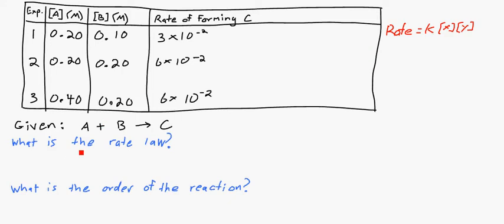Well you want to look at the table and then just kind of quickly break down what you have. In the first experiment here, concentration of A was 0.2, concentration of B was 0.1 and that produced a rate of 3 times 10 to the negative second, which is 0.03.